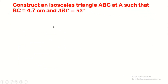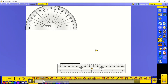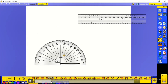Now let's construct another isosceles triangle: triangle ABC, isosceles at A, with base BC equal to 4.7 centimeters and angle ABC equal to 53 degrees. Since it is isosceles at A, the base is BC. Angle ABC is a base angle located at the base. Because base angles in an isosceles triangle are equal, the second base angle also measures 53 degrees. We start by drawing the base.